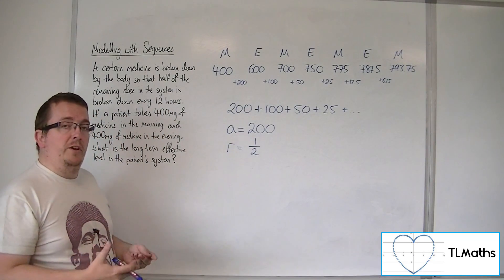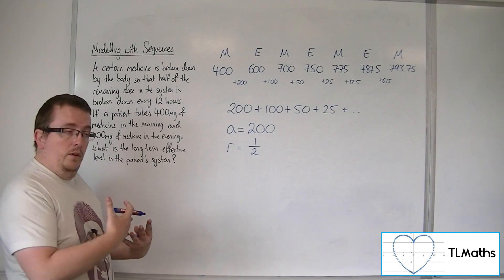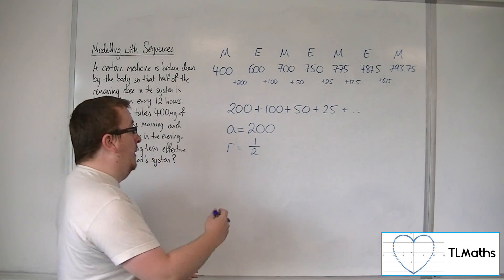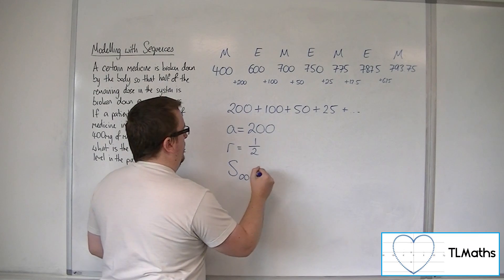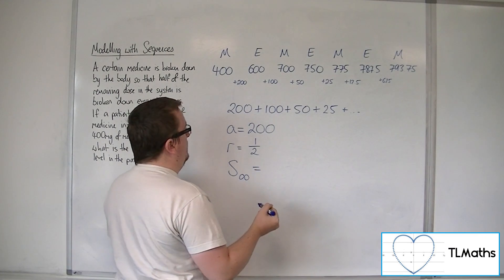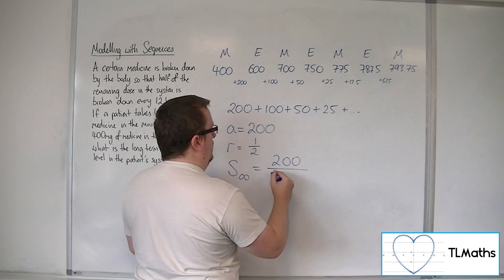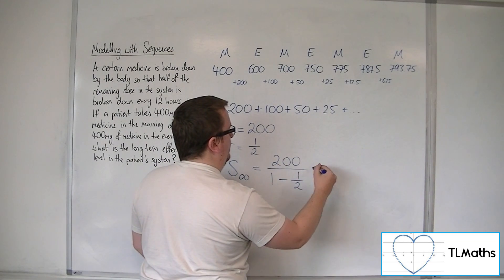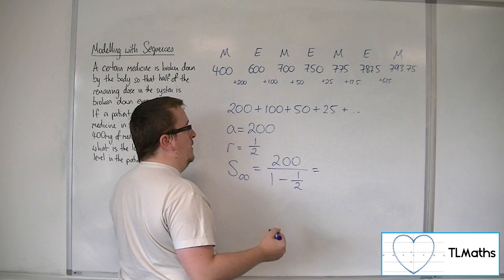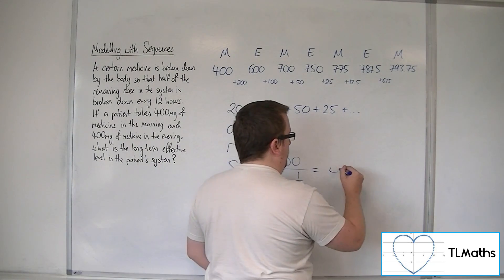Now, for that, because we're looking at long-term effective level, we could look at the sum to infinity. So, the sum to infinity of this is A, 200, over 1, take away 1 half, okay? Which is 400.